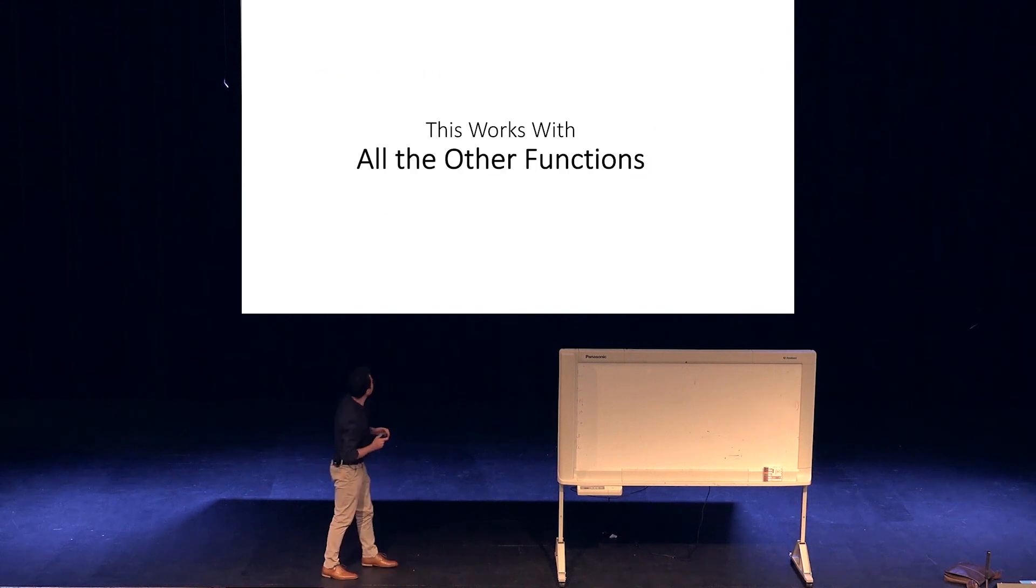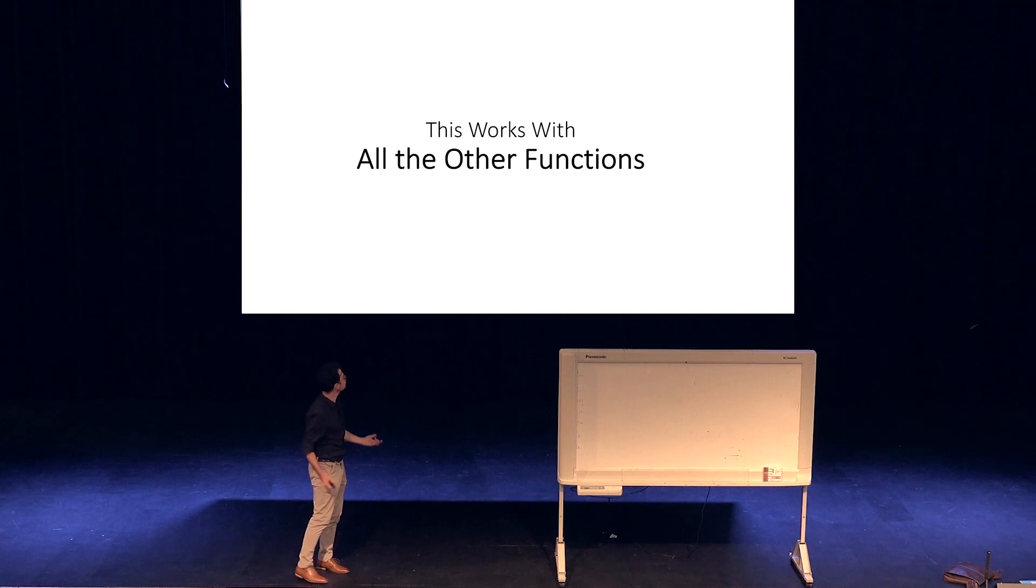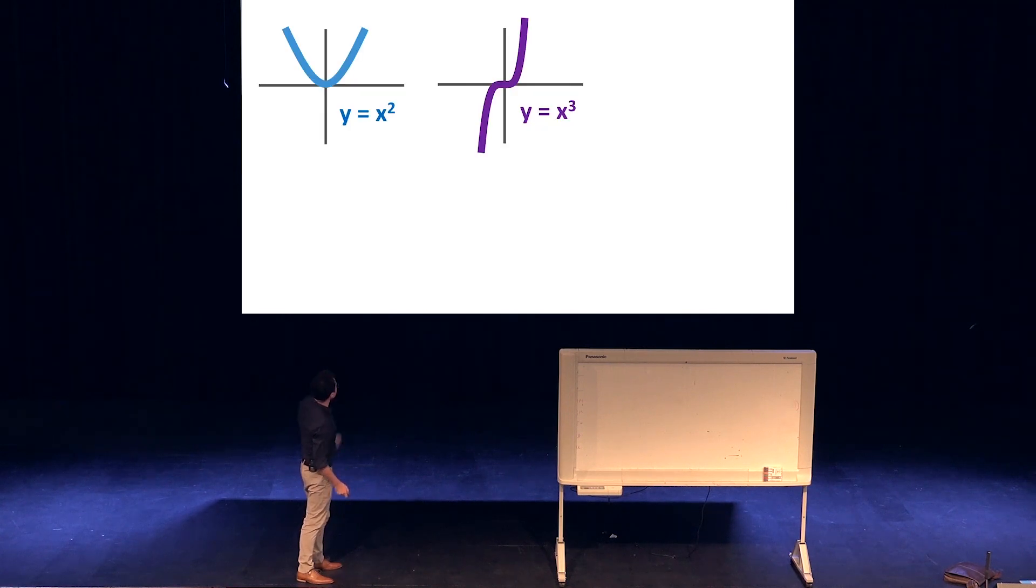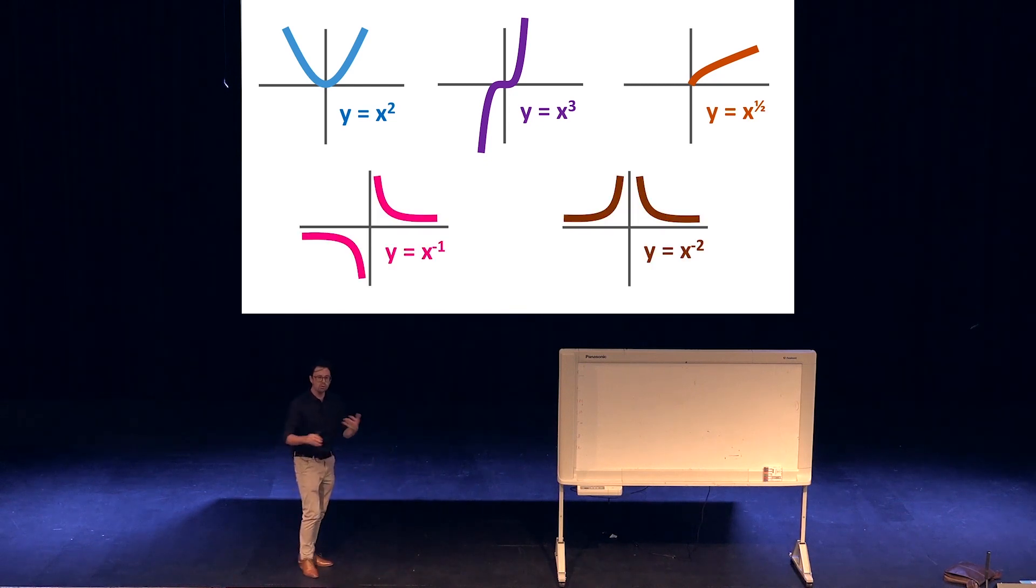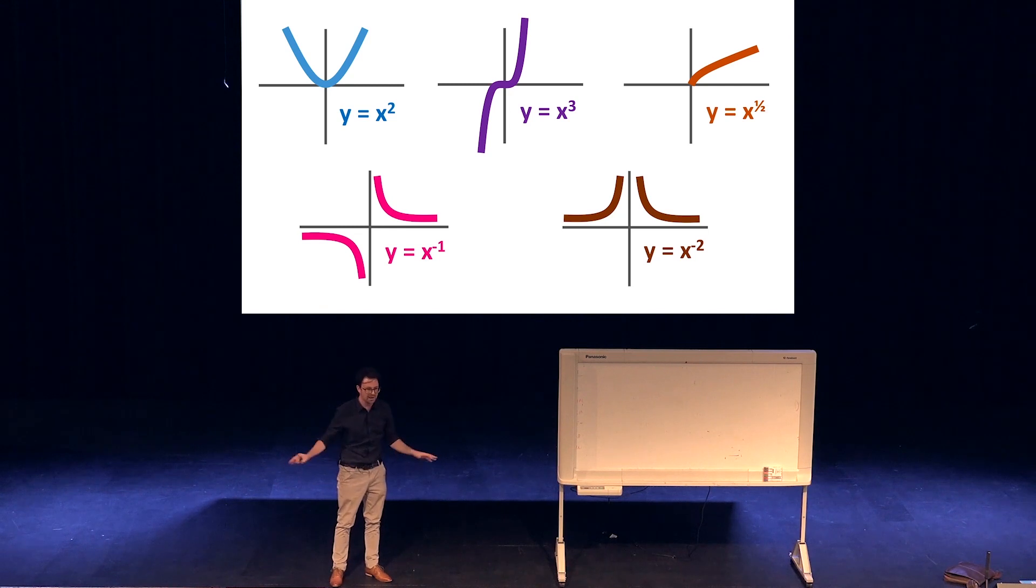And the cool thing about this is it works with pretty much any other function. So if you've got y = x², our parabola, or a cubic, or a square root graph, or a hyperbola or a truncus, all of these work the same way. In fact, every graph works exactly the same way.